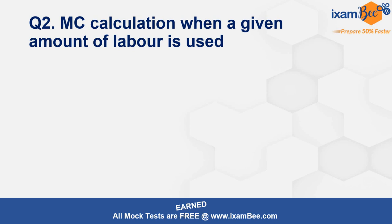The next question was on calculation of marginal cost. You were given the amount of labor used and the total product function, and had to find marginal cost. We don't have the exact equation that was given, but for most students the marginal cost was coming out to be five in this question.